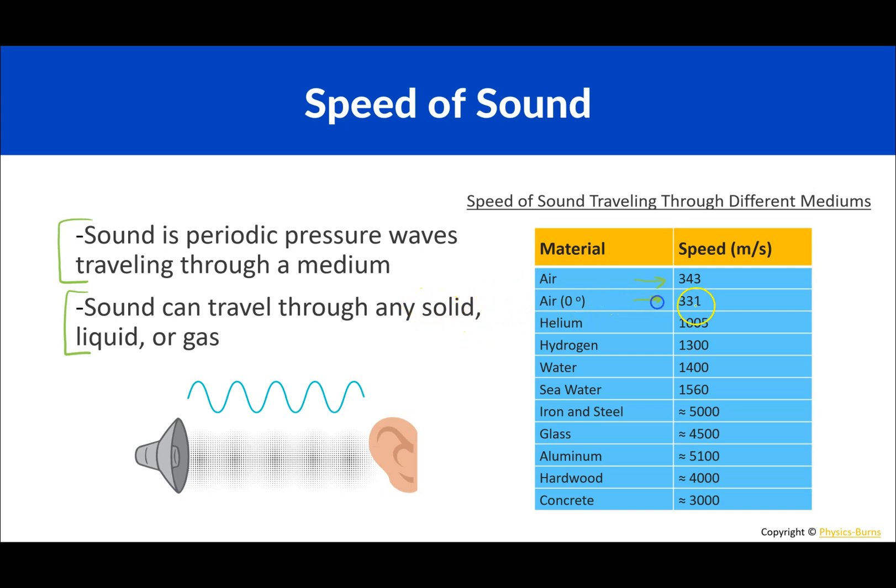You'll notice that when it's colder, it goes down. So it's 331 meters per second at zero degrees Celsius. In other types of gases, it will travel different speeds. In helium it goes around 1000 meters per second, hydrogen 1300 meters per second, water 1400 meters per second. That's why if you've ever tried to talk underwater, it sounds very different and it's going a lot faster than what you're used to. Seawater 1560, and then you'll notice with the solids it goes very, very fast because all the molecules are a lot more dense. Everything is much more dense and it's able to travel a lot more quickly through the dense material.